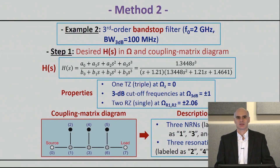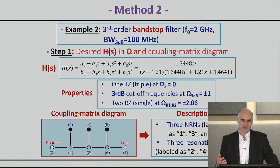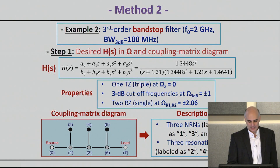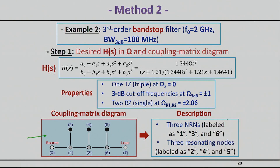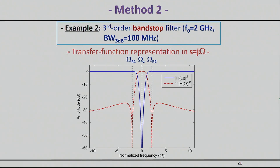The next examples follow the same technique, but I'll point out a few interesting things. Looking at the second coupling diagram, you can quickly realize this is a third-order bandstop filter — it has three poles, three resonators, and three non-resonating nodes supporting those resonators. The frequency response shown in the normalized omega domain confirms that we start with a coupling diagram already having the required response, just scaled to the normalized domain.